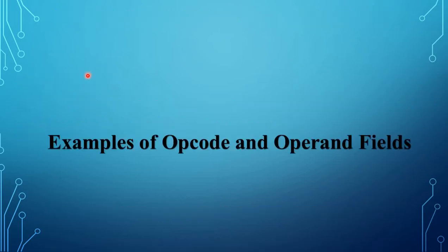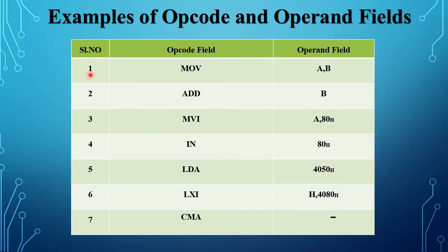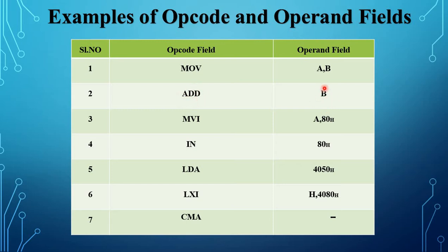Here are a few examples. The first example is MOV A, B. MOV is the opcode; A and B are the register names — A is the accumulator register, B is the 8-bit register. The operand field specifies the name of the register. Second example: ADD B. ADD is the opcode; B is the register, so in the operand field the name of the register is specified.